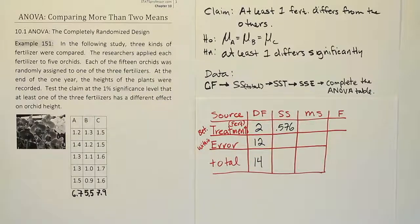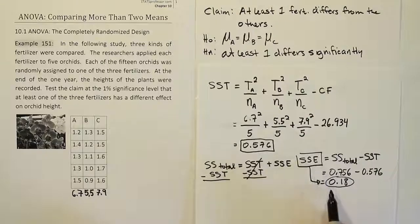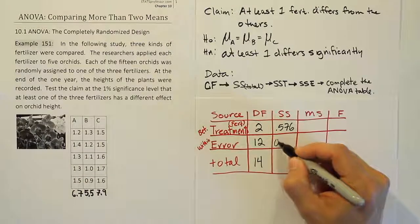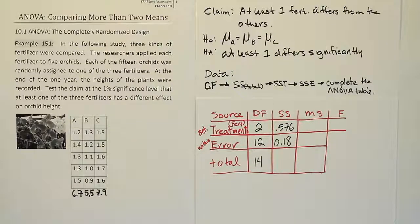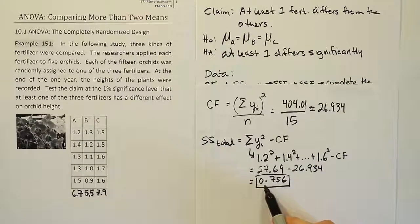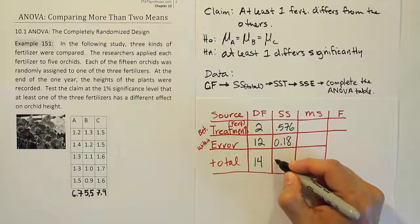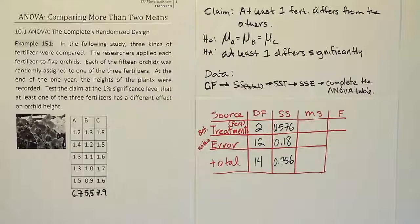Then if you look at the one for error, the error we worked out to be SSE 0.18. So 0.18. Now the total sum of squares we actually worked out earlier. And that total sum of squares was given to us as 0.756. So 0.756. Okay. So now you have your column filled in for sum of squares.